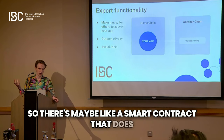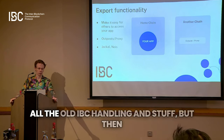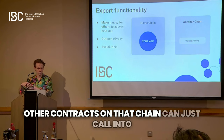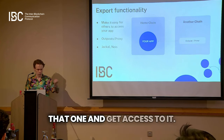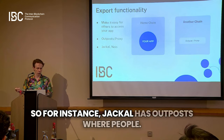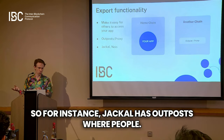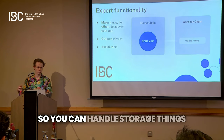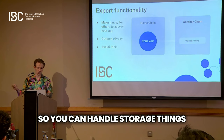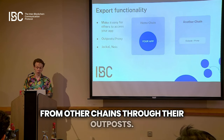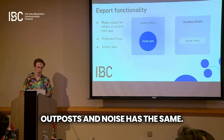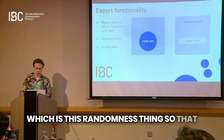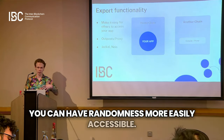In the more blockchain context, they've often been called outposts or proxies. There's maybe a smart contract that does all the IBC handling, but then other contracts on that chain can just call into that one and get access. For instance, Jackal has outposts for decentralized storage, so you can handle storage things from other chains through their outposts. Noise has the same for randomness, making randomness more easily accessible.